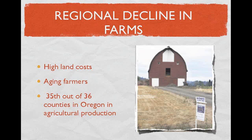There has also been a real regional decline in farms. Oregon has about 38,000 farms, but in Clatsop County we're 35th out of 36th in terms of regional agricultural production. We've got aging farmers in their high 50s, and high land costs because it's a tourist area — second home prices have driven up the cost of farmland.